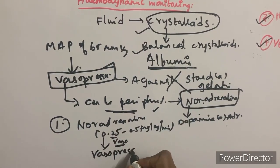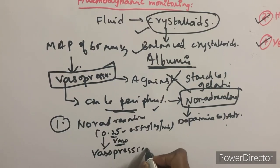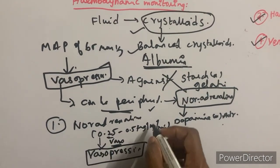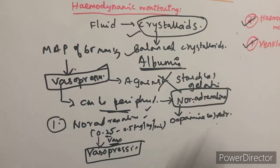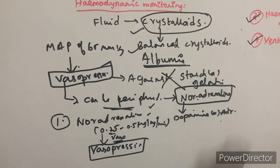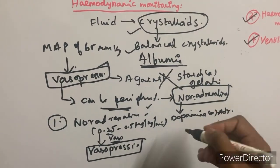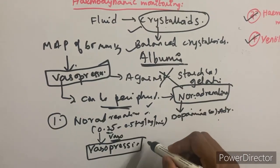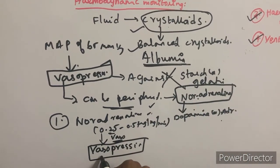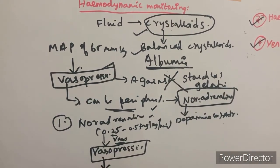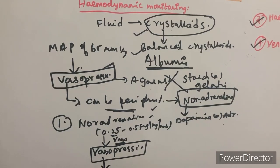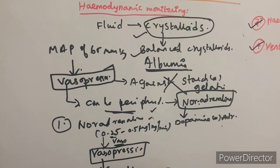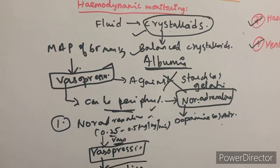Vasopressin is the second-line vasopressor of choice. If you are still unable to achieve the target MAP with noradrenaline and vasopressin, adrenaline is the third-line vasopressor and should be kept as a reserve agent.